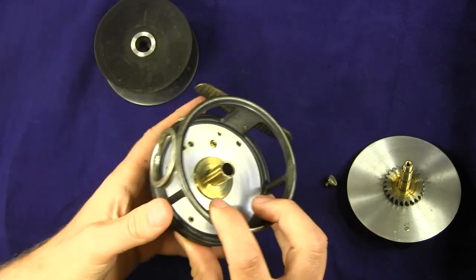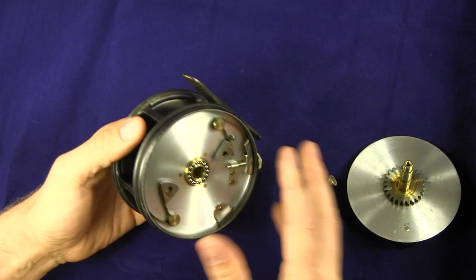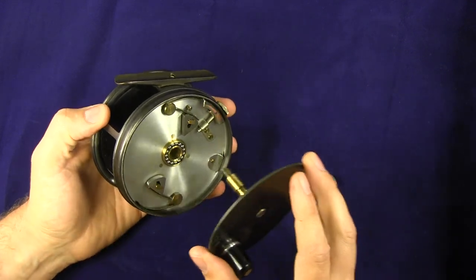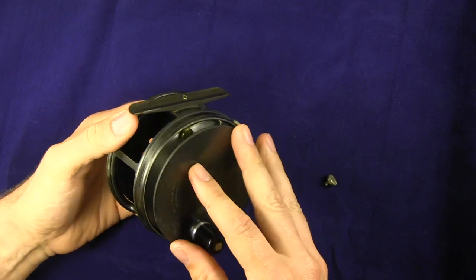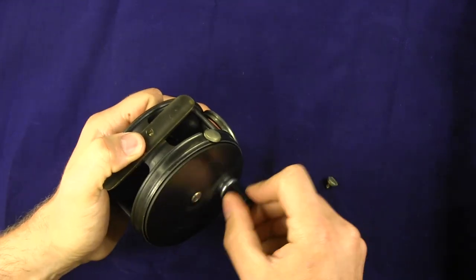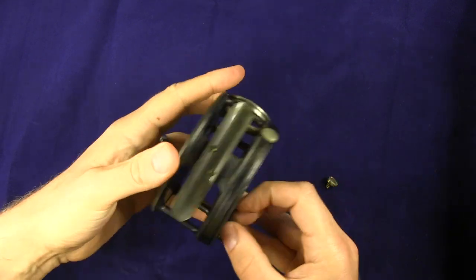So putting that back together, take the cage, spool, and then since this is a right hand retrieve reel, you put the face plate back on and wind it as you would on the right hand retrieve. It locks up and as you feel, it'll start to spin the spool there as it catches.